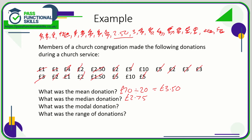The modal donation is the donation that is the most frequently occurring. There were five donations of two pounds, which was greater than the number of any other donation amount, so two pounds is the modal donation. The range went from ten to one, so that was a range of nine pounds.